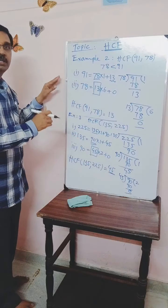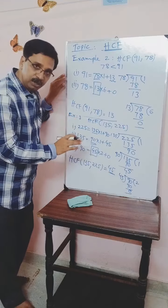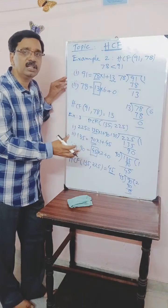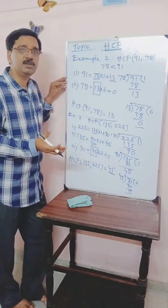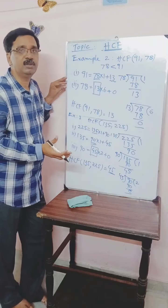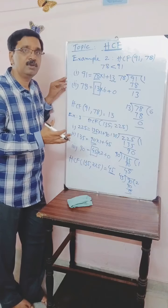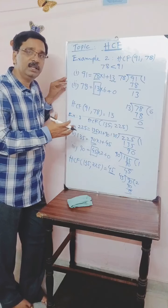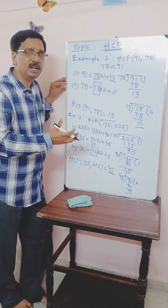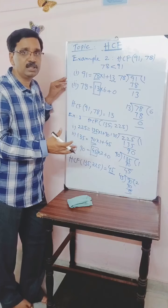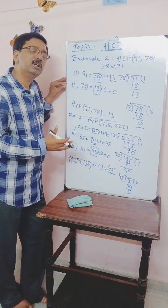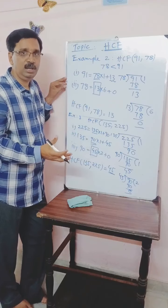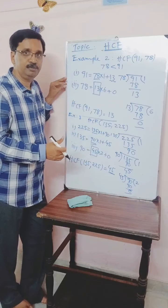We complete the second topic here — HCF. There are many examples in the textbook. You may also take some more examples to find HCF. We continue the lesson in the next day. Your task is to find the HCF of given numbers from the textbook exercises. Thank you.